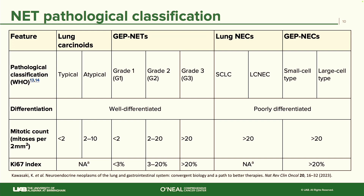This is the classification we use for neuroendocrine tumors and carcinomas. Lung carcinoids are divided into typical and atypical based on mitotic count and level of necrosis seen within the tissue. Gastroenteropancreatic NETs have grade one, grade two, and grade three based on mitotic count and KI-67. On the far right, neuroendocrine carcinomas have a small cell type and a large cell type, with a mitotic count and KI-67 greater than 20%, and they are the poorly differentiated type.